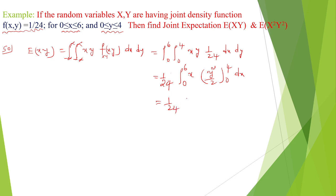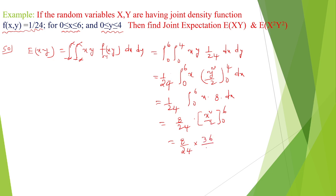That equals (1/24) times the integral from 0 to 6 of x multiplied by 4² = 16 divided by 2, which is 8, minus 0²/2. So we take 8 outside: (8/24) multiplied by x²/2 evaluated from 0 to 6. That gives (8/24) times 36/2 = 18, which simplifies to 6. So E(xy) = 6.